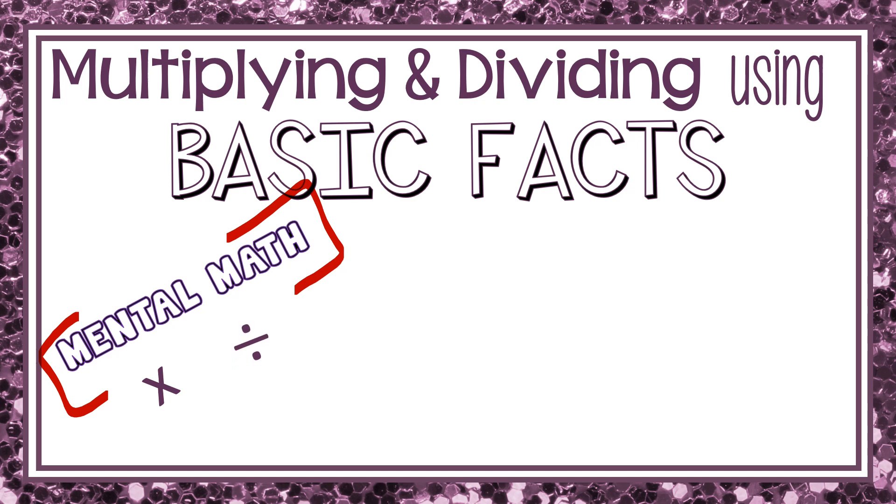So here's how I want you to try and use basic facts. Without using pencil and paper, solve 12 times 30. Well, I do know that 12 times 3 is 36. And I see that 30 ends in a zero, so my answer will end in zero. So 12 times 30 is 360. You use what you do know to solve what you don't know, and that's using basic facts to solve.